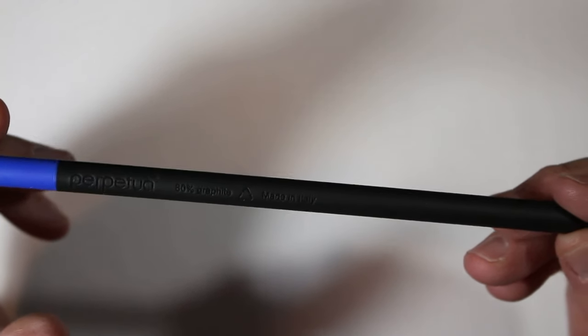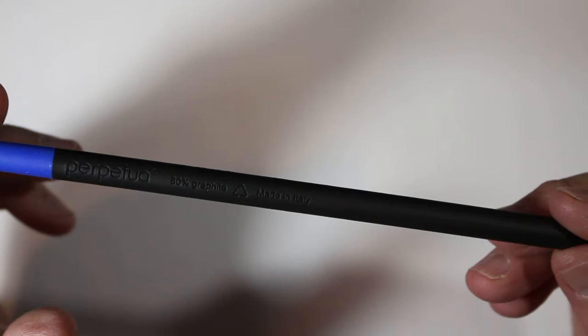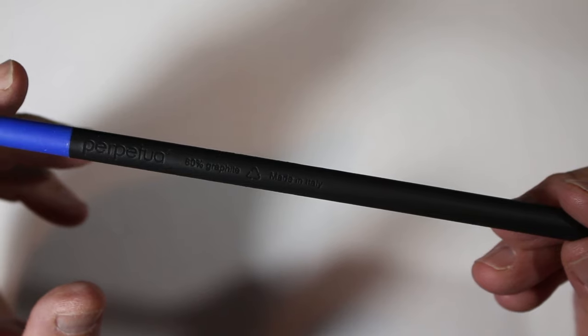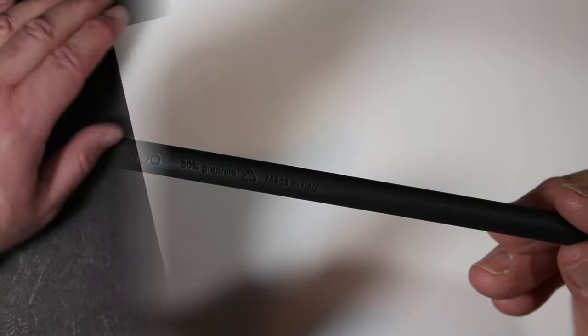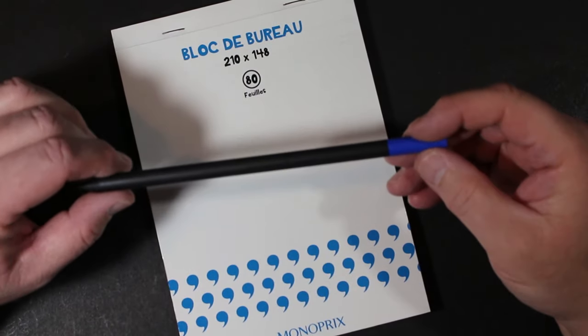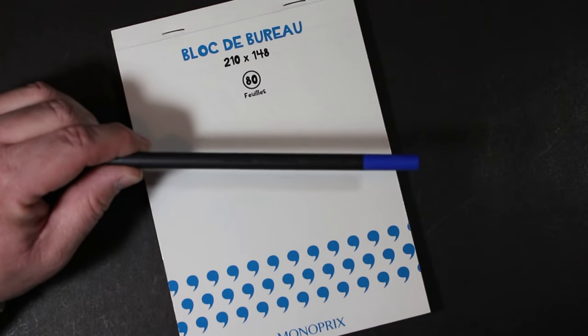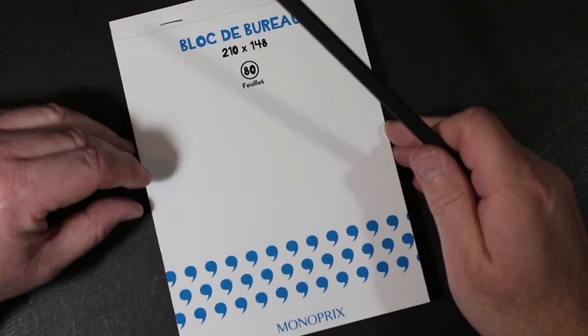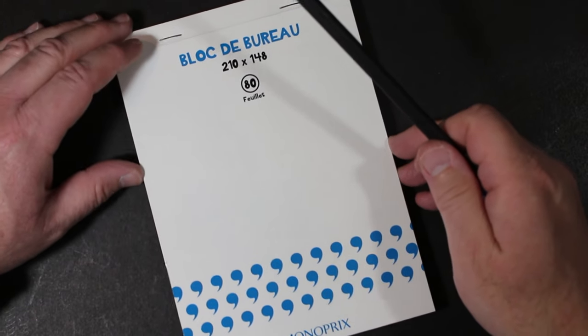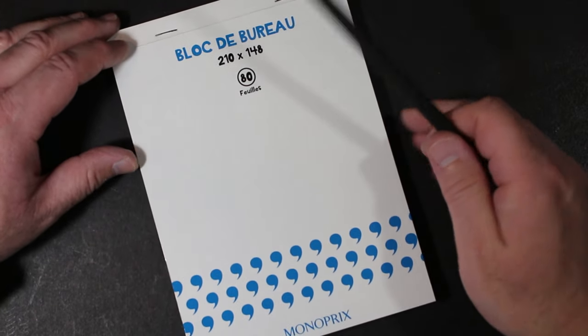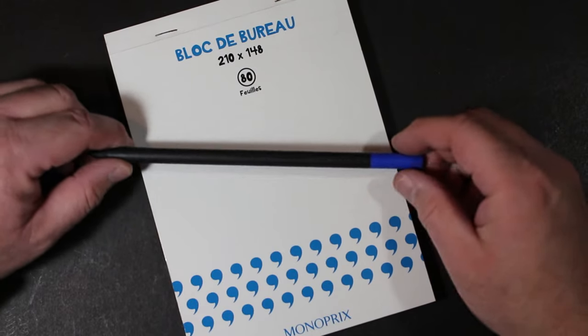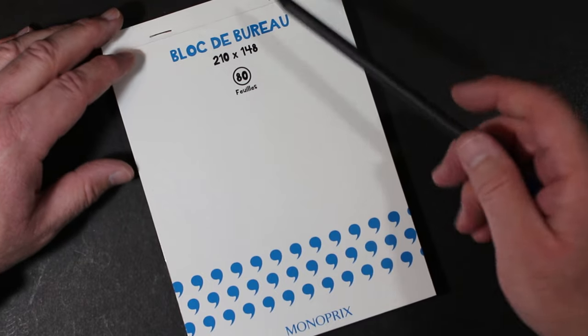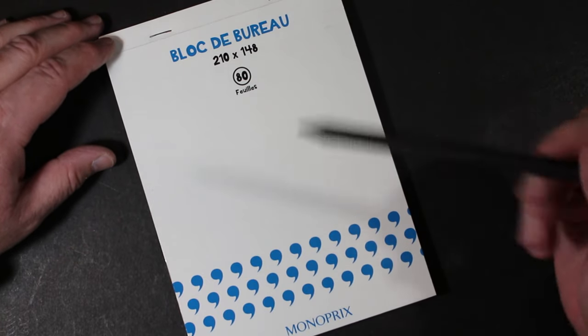Perpetua recycled graphite pencil made in Italy. Since we're using an Italian pencil, I thought it would be fun to use a French little notepad here to try it out on, just an inexpensive one that I picked up when I was in Paris last year.